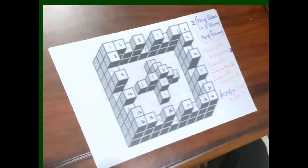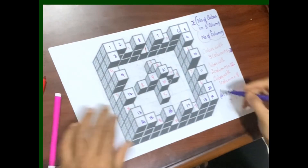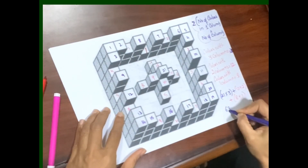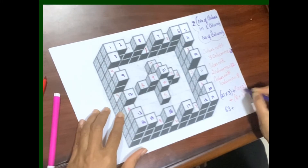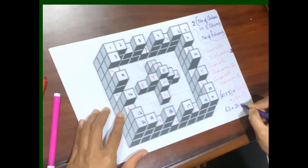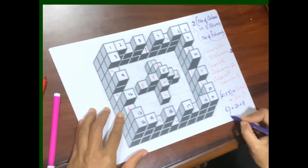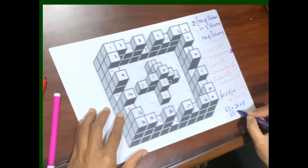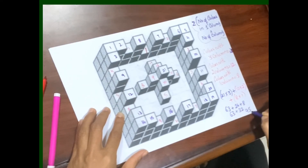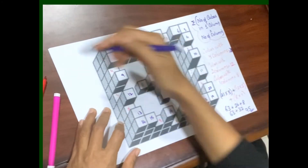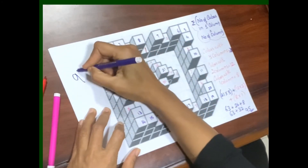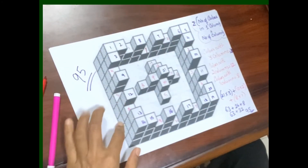So let's take the summation of all these: 21 upon 3 and 12 upon 2 and 8 upon 1. So the summation is 63 plus 24 plus 8 which is 95. Hence, in this solid, there are 95 cubes.